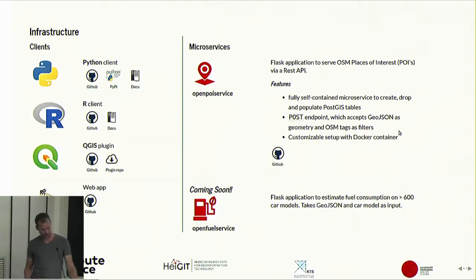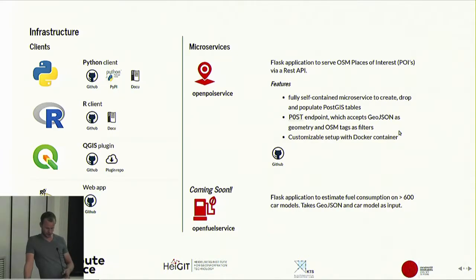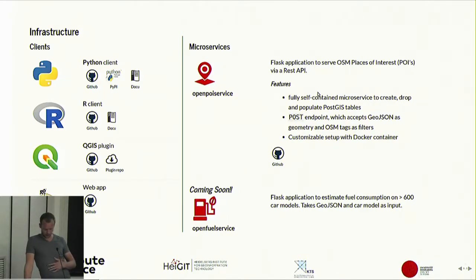Our infrastructure is growing. We offer quite a few clients to talk to our API natively: a Python client, an R client, and a QGIS plugin. You can also download the web app on GitHub and host it yourself — if you haven't seen it yet, go to maps.openrouteservice.org. We also have the open POI service, a small Flask application that can serve as a REST API on your local computer or on a server.